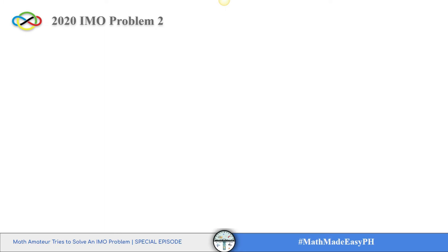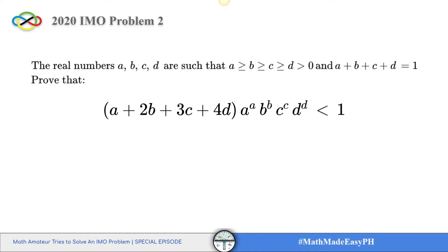Here is our problem for today. The real numbers a, b, c, and d are such that a ≥ b ≥ c ≥ d > 0, and a + b + c + d = 1. Prove that the quantity (a + 2b + 3c + 4d) × a^a × b^b × c^c × d^d is less than 1.